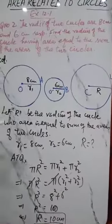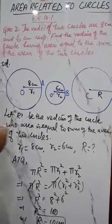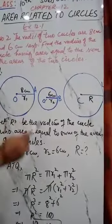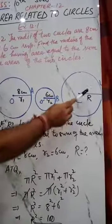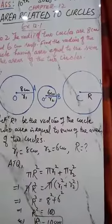required circle, whose area is equal to the sum of these two circles' areas, is 10 cm.